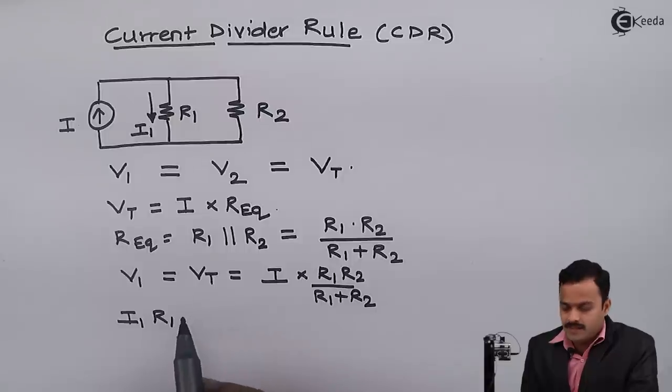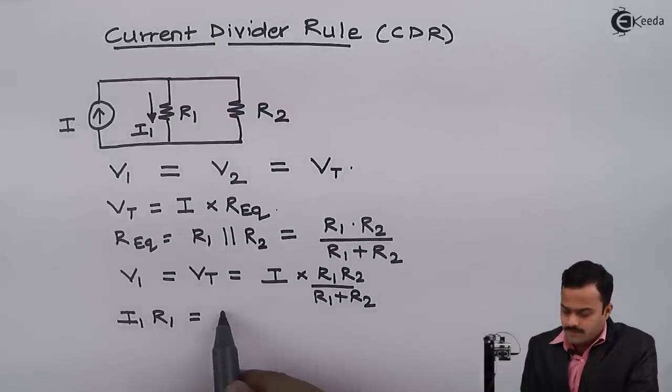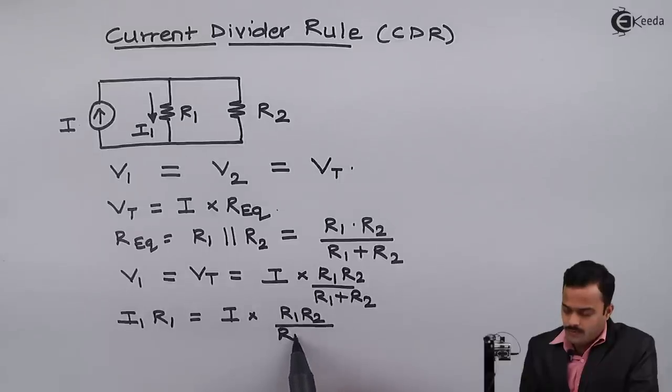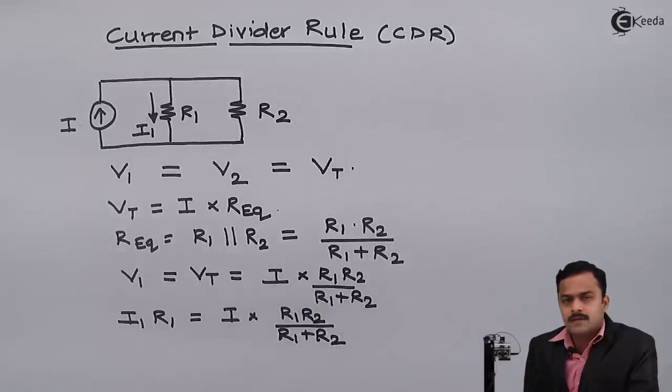So I will write V1 as I1 into R1 equals I multiplied by R1 R2 divided by R1 plus R2.